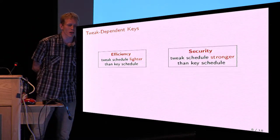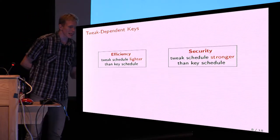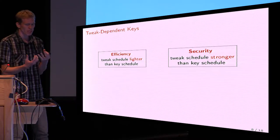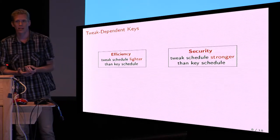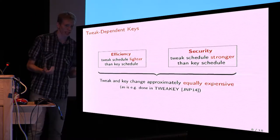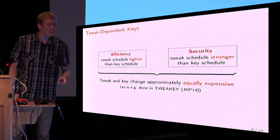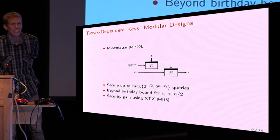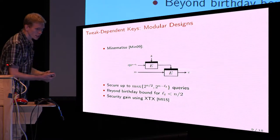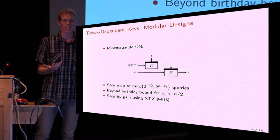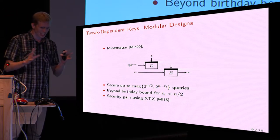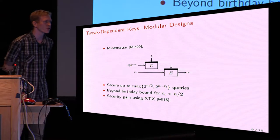Jean et al. considered it the other way around. They said the attacker doesn't have access to the key but does have access to the tweak. So to make it secure, the tweak schedule should be stronger than the key schedule. Inspired by this, if you combine the two viewpoints, you arrive at the Tweaky framework, which essentially blends the key and the tweak. There is also a modular construction by Minematsu from 2009: the key and tweak get encrypted to derive a subkey, and the message is then encrypted with that subkey. This is beyond birthday bound secure if the tweak length is less than n/2 bits, though you can never reach optimal security — at most 2n/3.